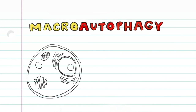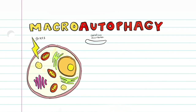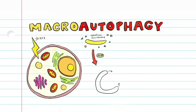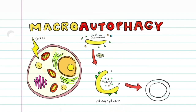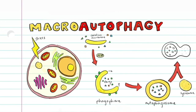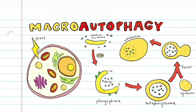Macroautophagy is induced when a stress signal is received by the cell. This stress signal causes a cascade of reactions that ultimately generates PI3P on the isolation membrane to recruit factors necessary for elongation. This is now the phagophore, and it elongates further to engulf the cargo to be digested. This membrane-bound cargo is now called the autophagosome. A lysosome then fuses with the autophagosome to form an autolysosome. A lysosome is an acidic membrane-bound organelle that contains proteases to degrade proteins. The proteases from the lysosome can now digest the cargo in the autolysosome and release nutrients and metabolites.